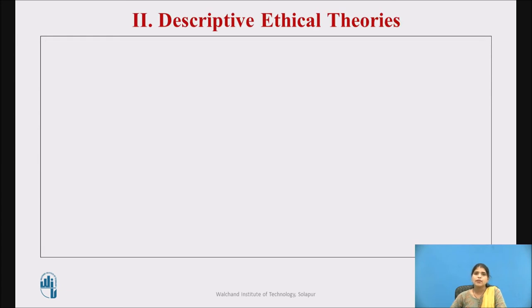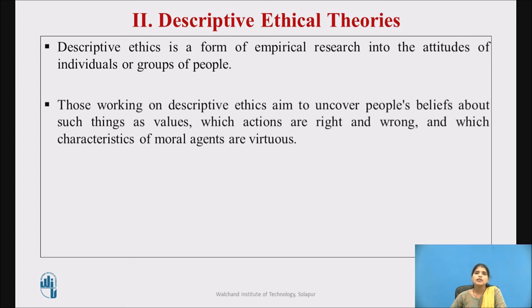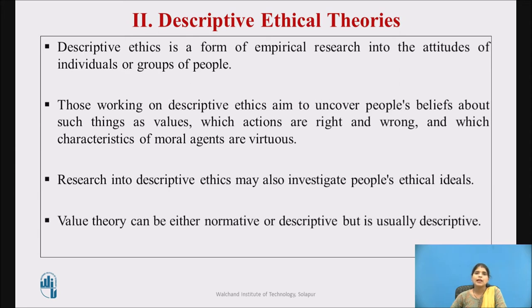Now we will see the second type of ethical theories — descriptive ethics. It is a form of empirical research into the attitudes of individuals or groups of people. Descriptive ethics involves empirical investigation and is usually studied by those working in evolutionary biology, psychology, sociology, or anthropology. Its aim is to uncover people's beliefs about values, which actions are right and wrong, and to reveal these things in front of people. It also investigates people's ethical ideals. Value theory can be either normative or descriptive, but it is usually descriptive.